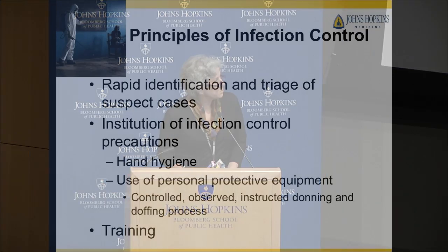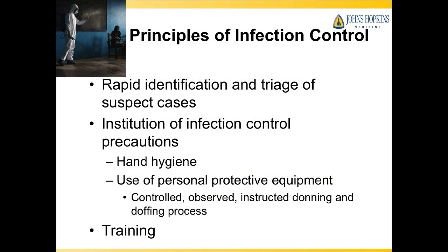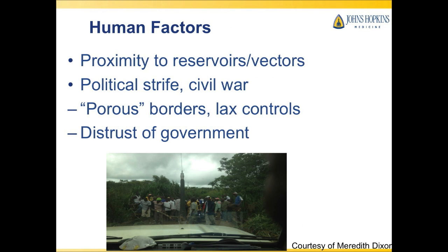So what do we do? We want to identify cases, as David Peters mentioned, triage them, put infection control in place, and train people. This outbreak has been complicated by a lot of human factors and distrust — not only of the government but of medical care providers. By improving outcomes, I think we can improve that trust.